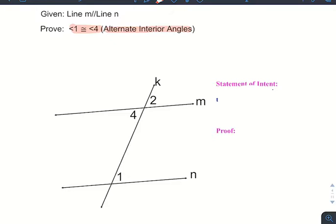This is like saying define the word house - the one word you can't use is house. So if we want to prove angle 1 and angle 4 are congruent, the one thing we cannot use is alternate interior angles. We've got to prove it indirectly.